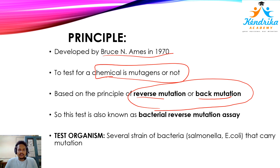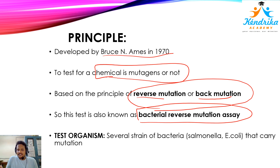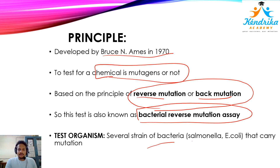We are not repairing any mutation here — this reverse mutation is the principle only. This assay is also known as the bacterial reverse mutation assay, because reverse mutation is mostly found in bacteria. The test organism used here is several strains of bacteria. If you take a bacterial vector, you can find out whether this particular reverse mutation is happening or not. We take specific bacteria such as Salmonella or E. coli that carry a particular mutation.